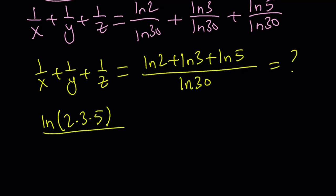And then divide it by the same. But anyways this is what we get. What is 2 times 3 times 5? That's an interesting question. It's 30. So this is ln 30 divided by ln 30. And guess what? That is equal to 1. And that happens to be the answer.